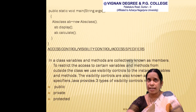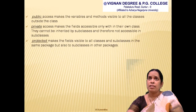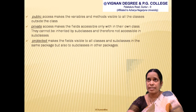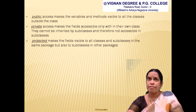Finally, moving on to access specifiers. In Java, there are three types of access specifiers — also called visibility controls or access controls — used to restrict access to variables and methods. The first is 'public': variables and methods can be accessed by any class, with no restriction. The second is 'private': variables and methods can be accessed only within that particular class, not even by subclasses — providing the highest level of protection.